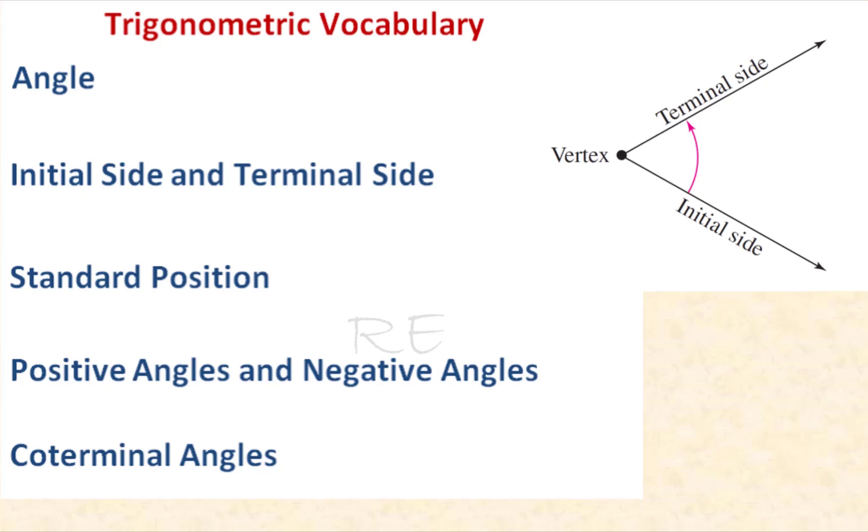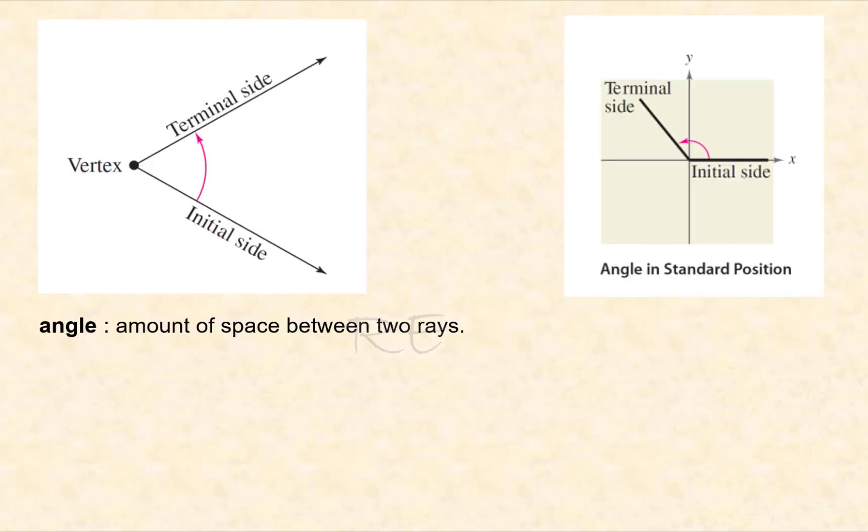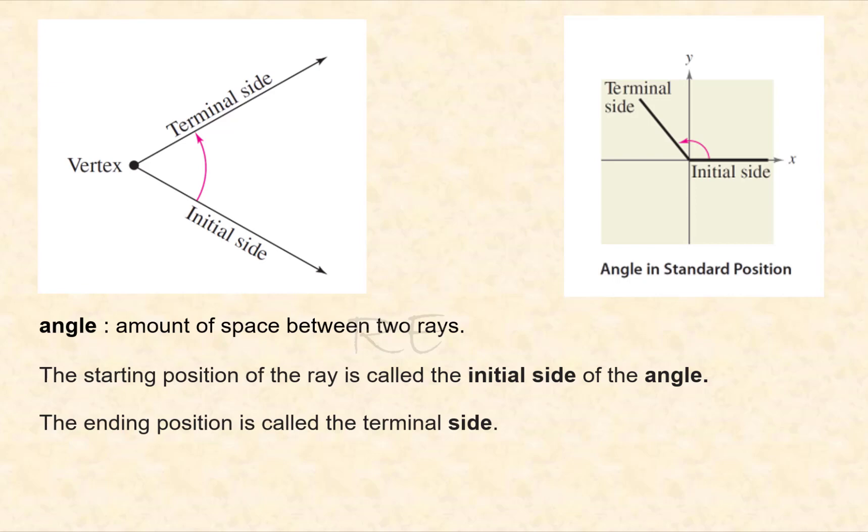An angle is the amount of space between two rays. The starting position of the ray is called the initial side of the angle. The ending position is its terminal side.